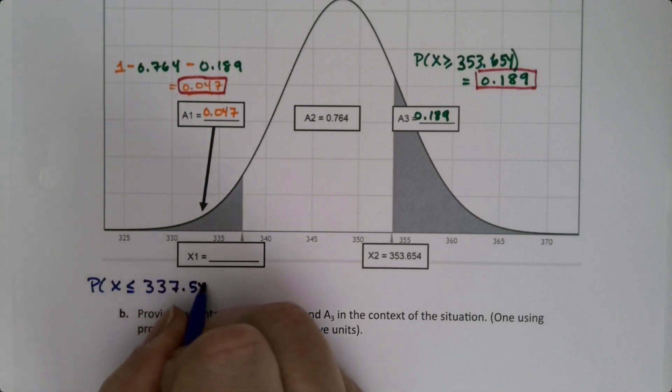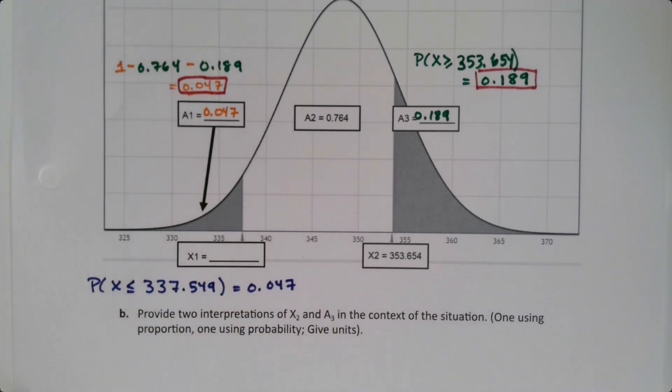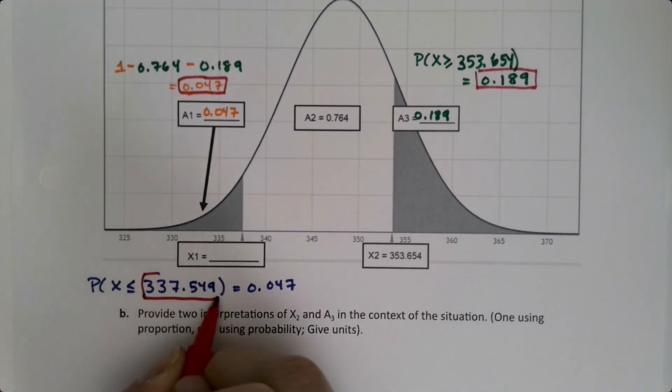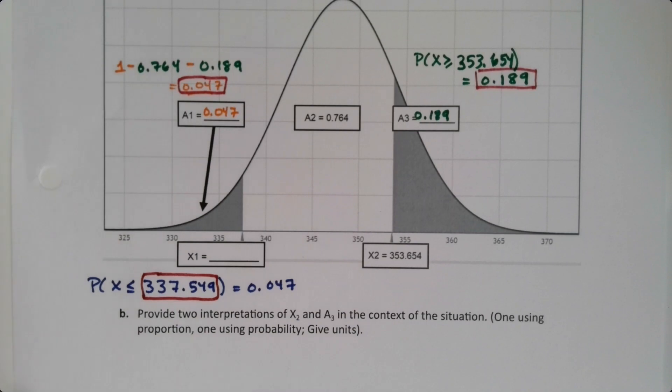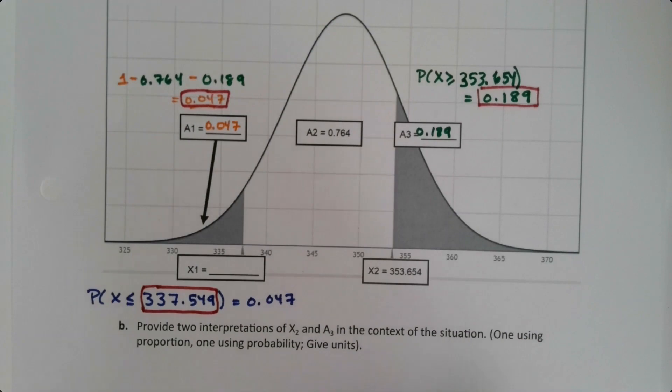P(X ≤ 337.549) = 0.047. The answer is this part in here. That's what we were looking for.